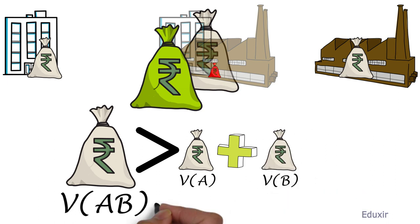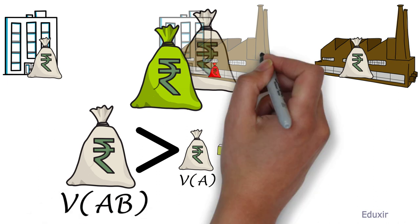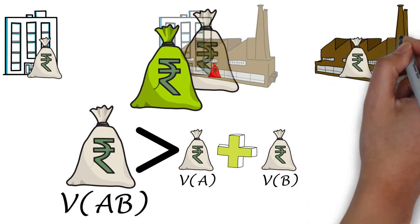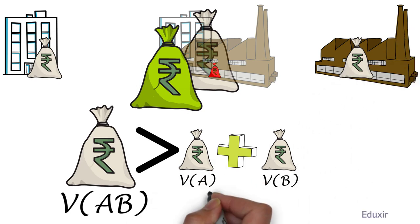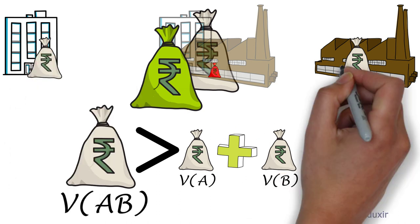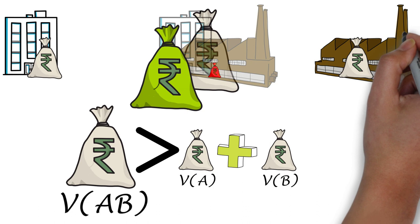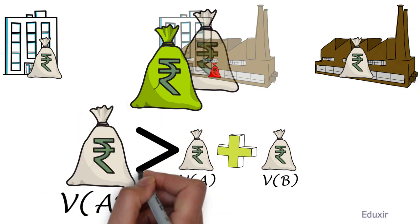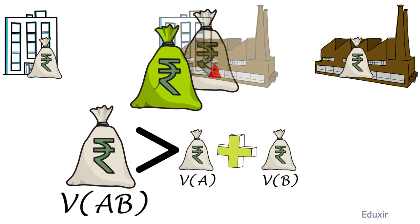Here as I mentioned, VAB stands for value of the big entity formed by merging entity A and entity B. VA stands for value of the entity A taken alone and VB stands for value of the entity B taken alone. Thus, when the combined value of the merged entity is more than the individual values of the business entities A and B before the merger, then only it can be said that the merger is benefiting through the synergies.